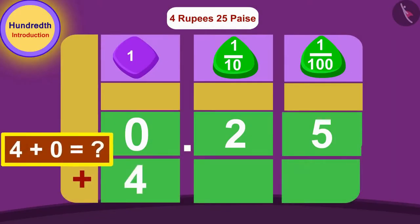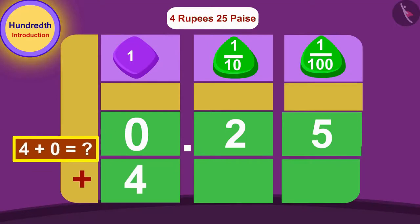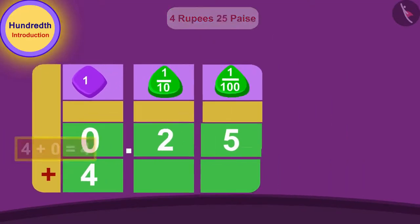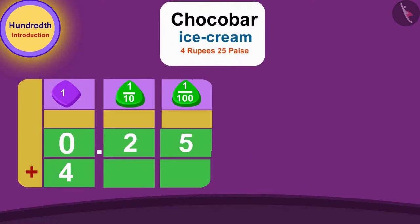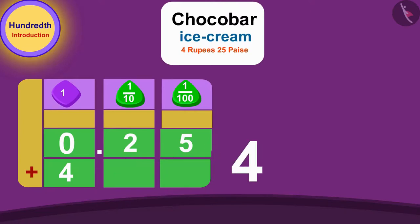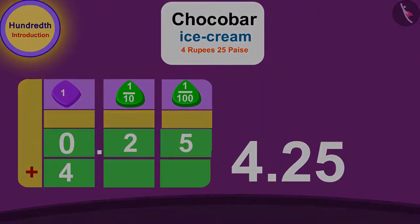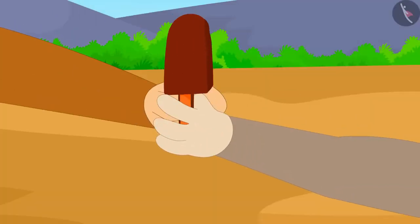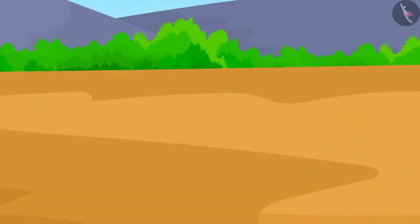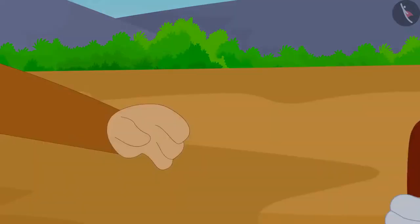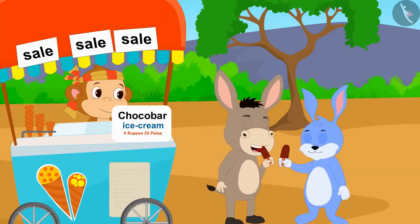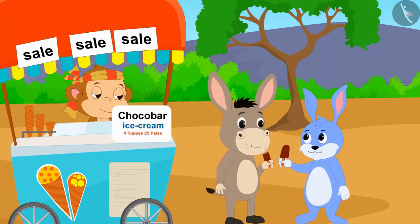Now, if we add 4 to 0.25, what do we get? 4. In this way, we can write the new price of Chocobar ice cream as 4.25 rupees using the decimal point. Bunny and Bhoala bought one Chocobar ice cream each from Babban and happily returned home eating ice cream.